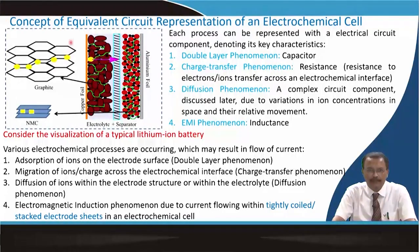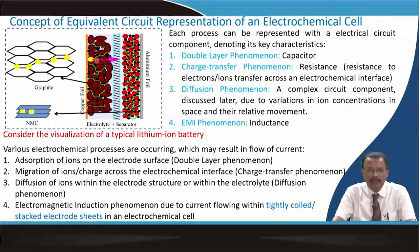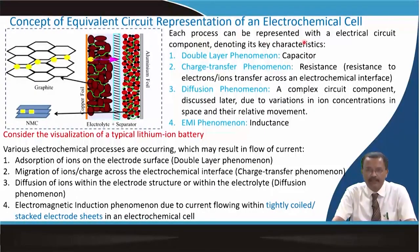In the construction, you have a separator in between, which is soaked with electrolyte. At one end, you have the cathode material coated on copper foil. Each process in this cell can be represented with an electric circuit denoting the key characteristics, and I will try to introduce the electric circuit equivalent of each of these.